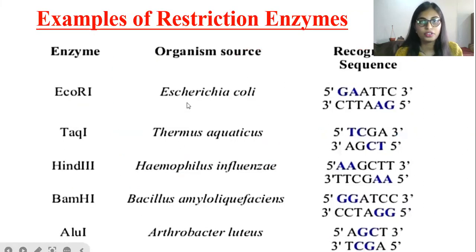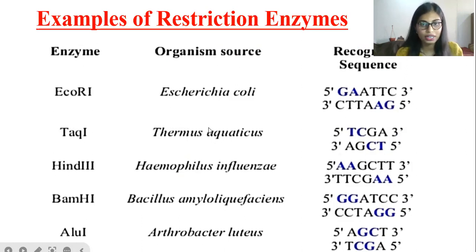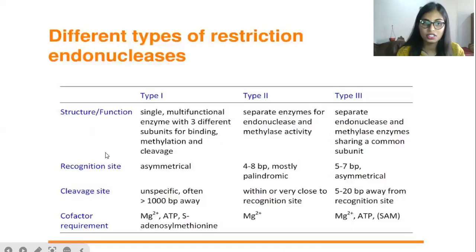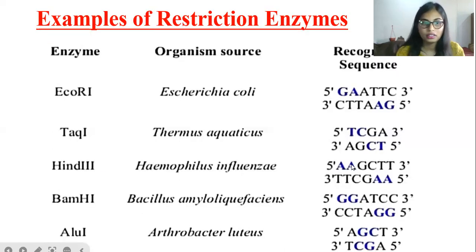Here are examples of different restriction enzymes. EcoR1 — organism source is Escherichia coli — this is the recognition sequence and how it cleaves. TaqI — organism source is Thermus aquaticus, the same organism as TAQ polymerase enzyme — this is the recognition sequence; the blue color indicates the cleavage site. HindIII — that is Haemophilus influenzae — restriction endonuclease. BamHI — that is Bacillus amyloliquefaciens. Next is Arthrobacter luteus. These are some examples for the restriction enzymes.